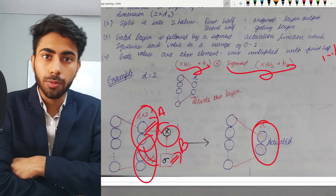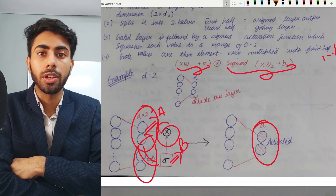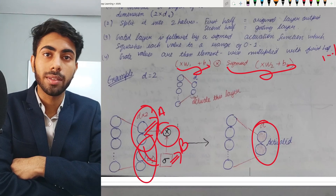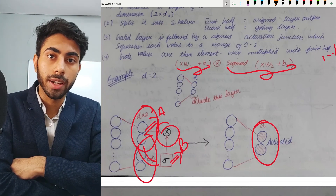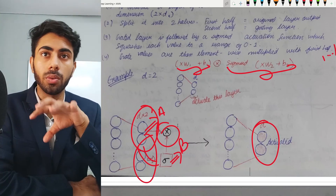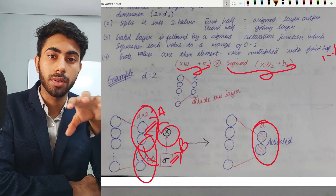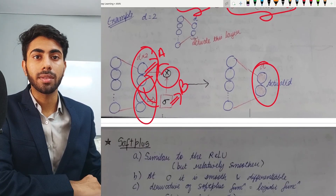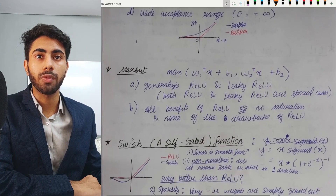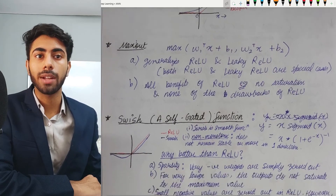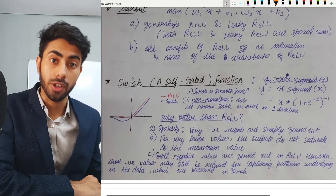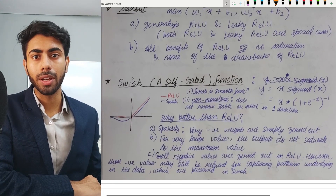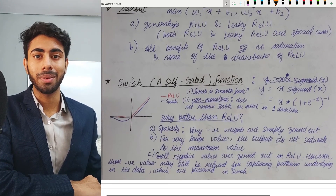That was all for today. In this video we learned everything about ELU (Exponential Linear Units) and GLU (Gated Linear Units). In the next video we will be discussing the Softplus activation function, Maxout, and the Swish activation function. See you in the next video — bye!